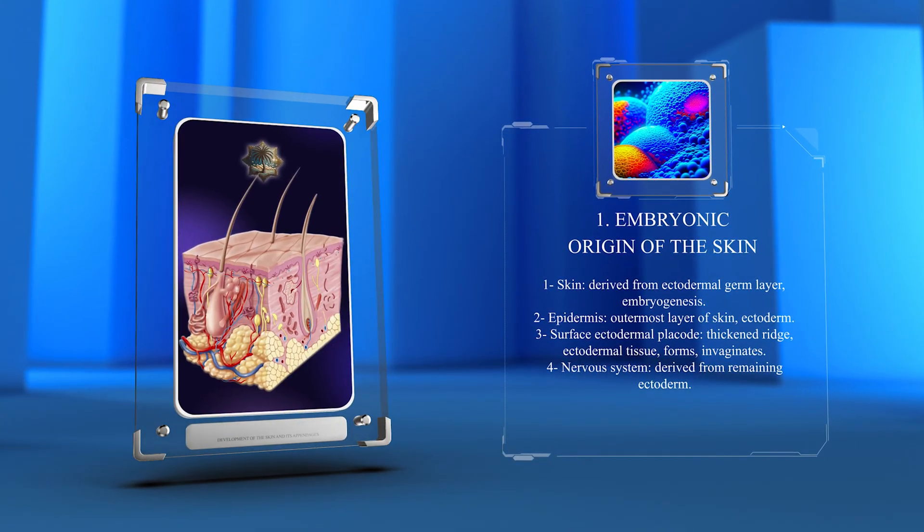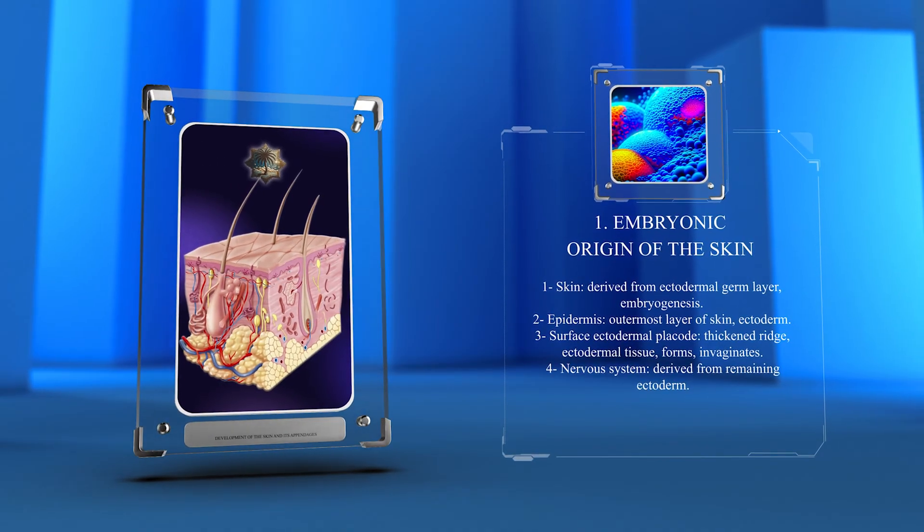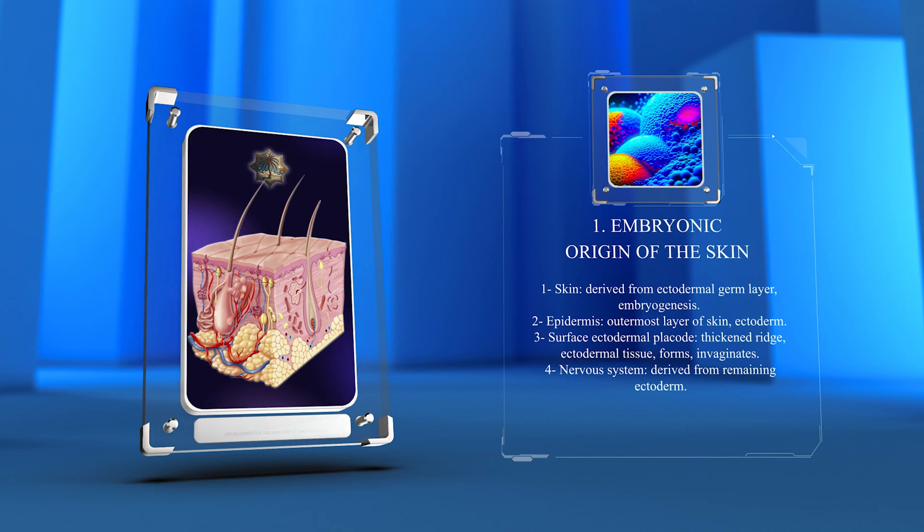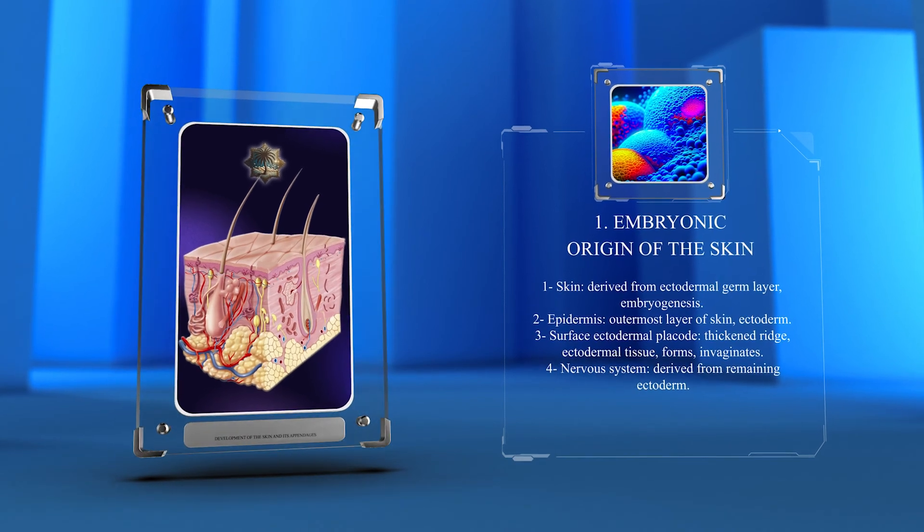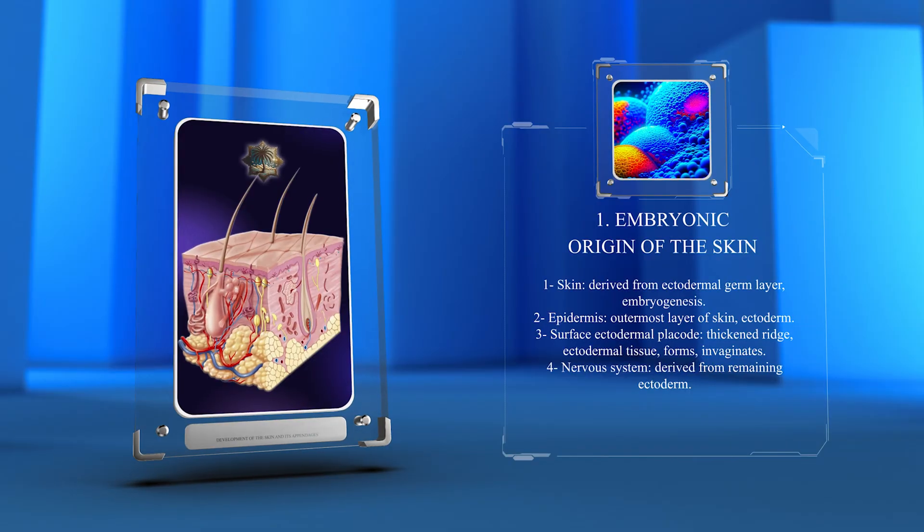During early development, a thickened ridge of ectodermal tissue, known as the surface ectodermal placode, forms and starts to invaginate. This invagination eventually gives rise to the epidermal layer, while the remaining ectoderm gives rise to other tissues, such as the nervous system.